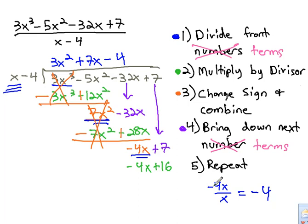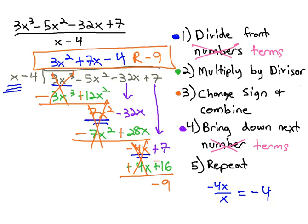One last time, we'll change the sign on the negative 4 and the positive 16, so that the 4's subtract out, and we're left with negative 9. There's a remainder of negative 9, and we have our solution, following the same steps that we followed in regular long division.